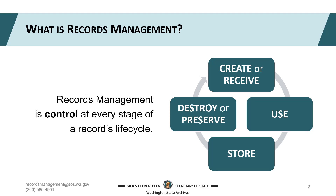The last stage in a record's life cycle is destruction or preservation. The best part of destroying non-archival records and transferring archival records is that you and your agency are no longer responsible for that material. At that point, you can point to the DAN that gives you the authority to destroy or transfer those records.